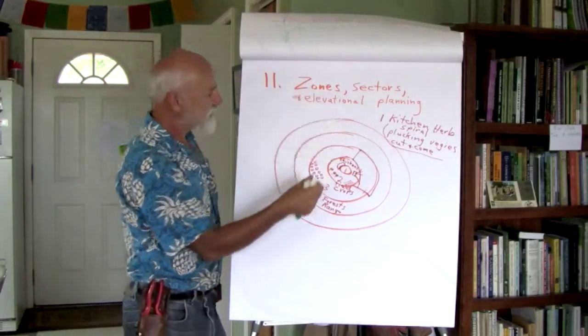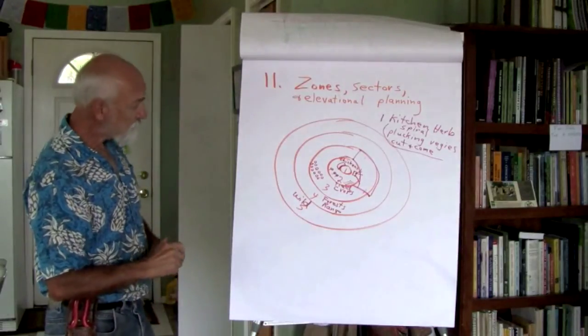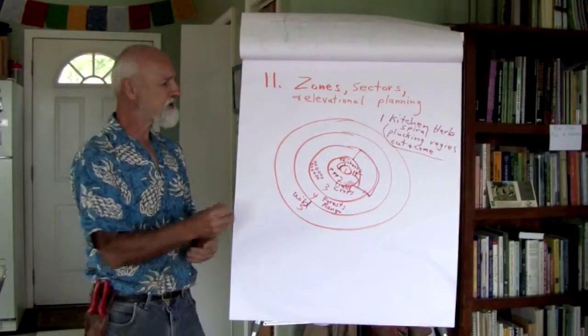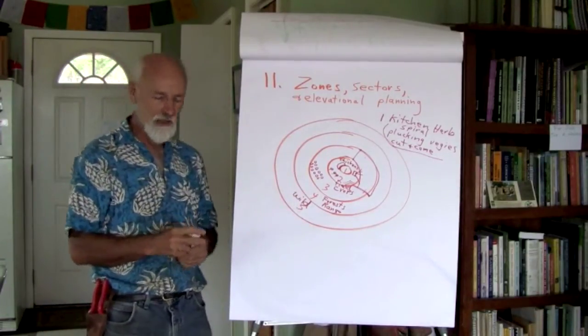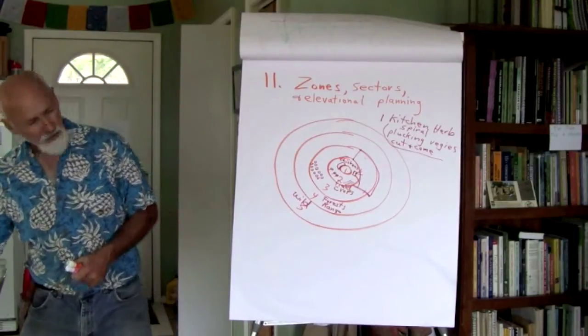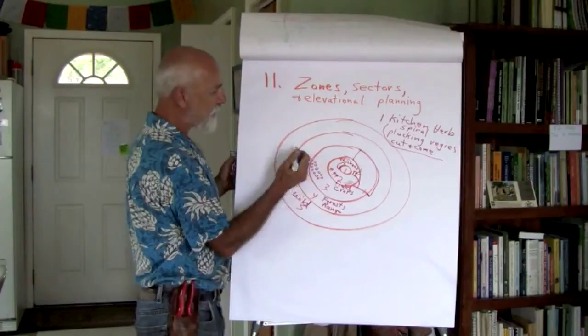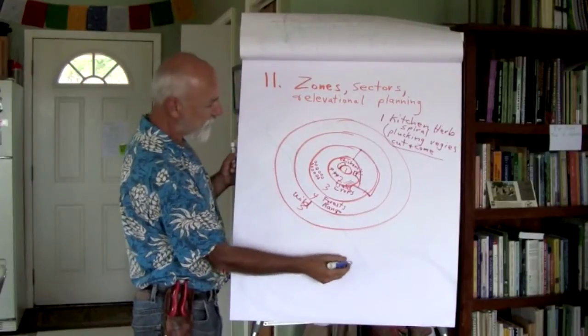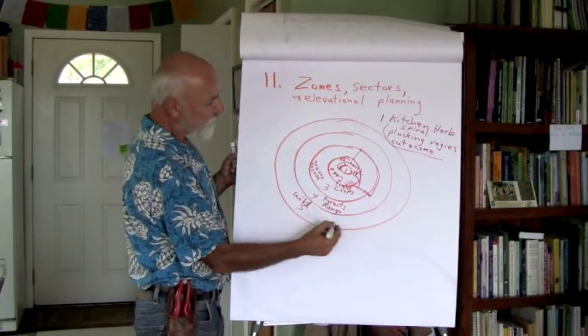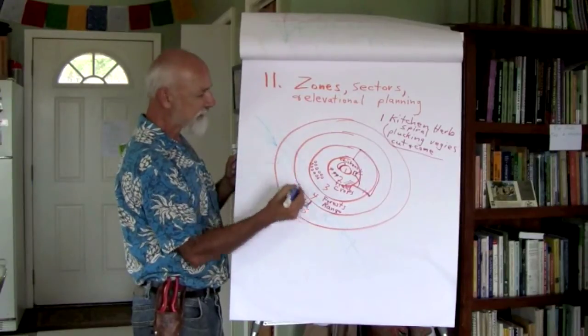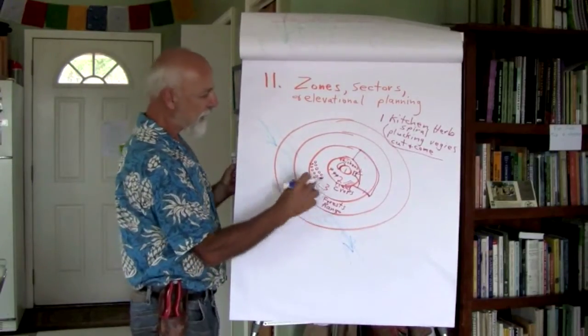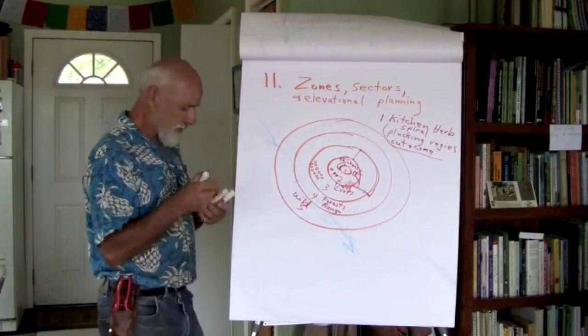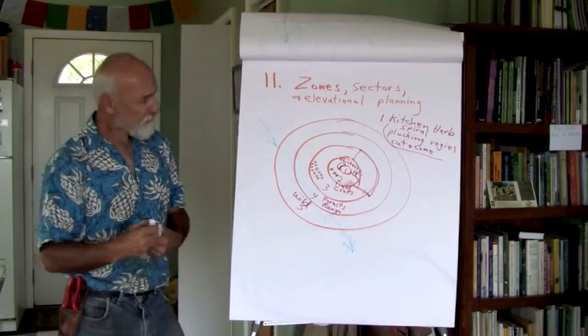So there's the zones. The sectors come in by looking at what energies are coming into your system from outside. So we're going to have different kinds of sectors. For instance, if we have in our homestead a stream that comes through here and it has a hundred year flood plain that could flood out to here, we have a water sector, the water's going through the system, and it could have a serious influence. We really have to consider that water sector.